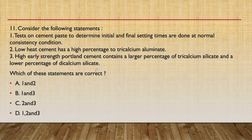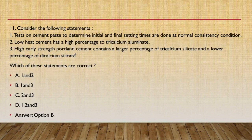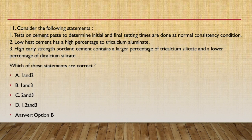Eleventh question: evaluating three statements — tests on cement paste to determine initial and final setting time are done at normal consistency (correct); low heat cement has a high percentage of tricalcium element (incorrect, as tricalcium produces high heat of hydration; low heat cement requires high C2S — dicalcium silicate); and high early strength Portland cement contains larger percentage of C3S and lower C2S (correct, as C3S gives high early strength while C2S gives long-term strength). The correct answer is B: statements 1 and 3.